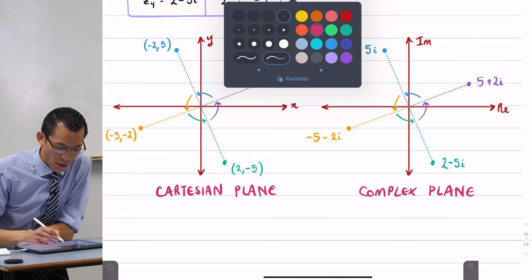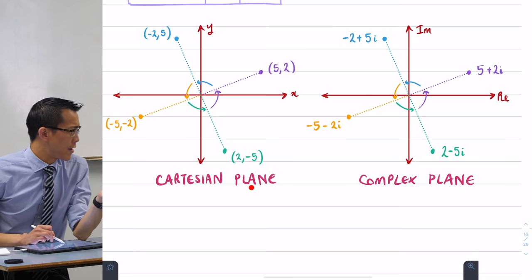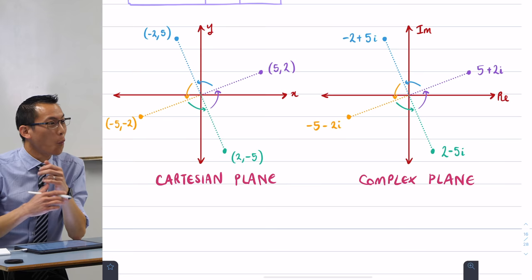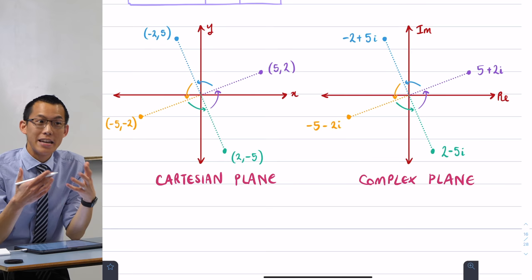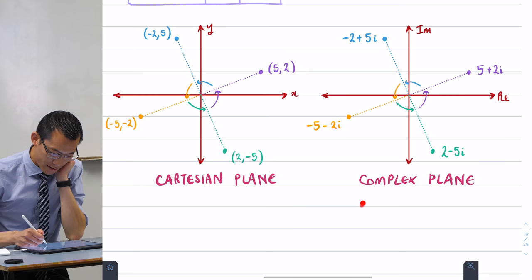Now, some of you may have heard this language used before, but Cartesian plane is named after a French mathematician. Does anyone know his name? René Descartes, right? So, Cartesian plane. We name the complex plane, or particularly a complex plane when you put complex numbers on it, we name it after another French mathematician. His name was Jean-Robert Argand. A-R-G-A-N-D.